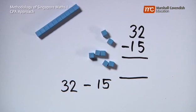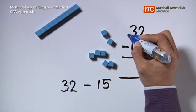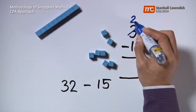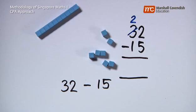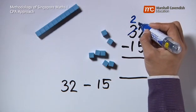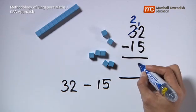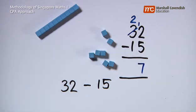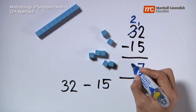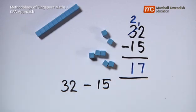We can rename 32 as 20, or 2 tens, and 12 ones. Now, there's ample ones to subtract 5 away from, resulting in 7 ones, and then subtracting 1 ten from 2 tens, resulting in 1 ten, giving a final result of 17.